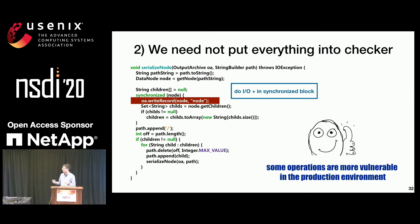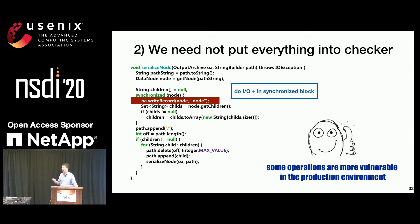But some operations could be more vulnerable in the production environment. For example, a write record operation that depends on the disk, network stack, storage stack, or scheduling in a specific production setup — including them in the watchdog checking can likely expose some issues.